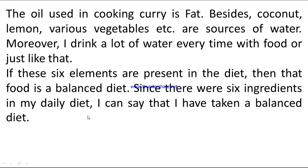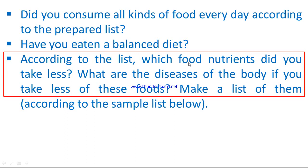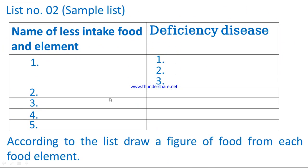Next question: according to the list, which food nutrients did you take less? What are the diseases of the body if you take less of these foods? Make a list of them according to the sample list below. List number two, sample list — name of less intake food, element, and deficiency disease. According to the list, draw a figure of food from each food element.